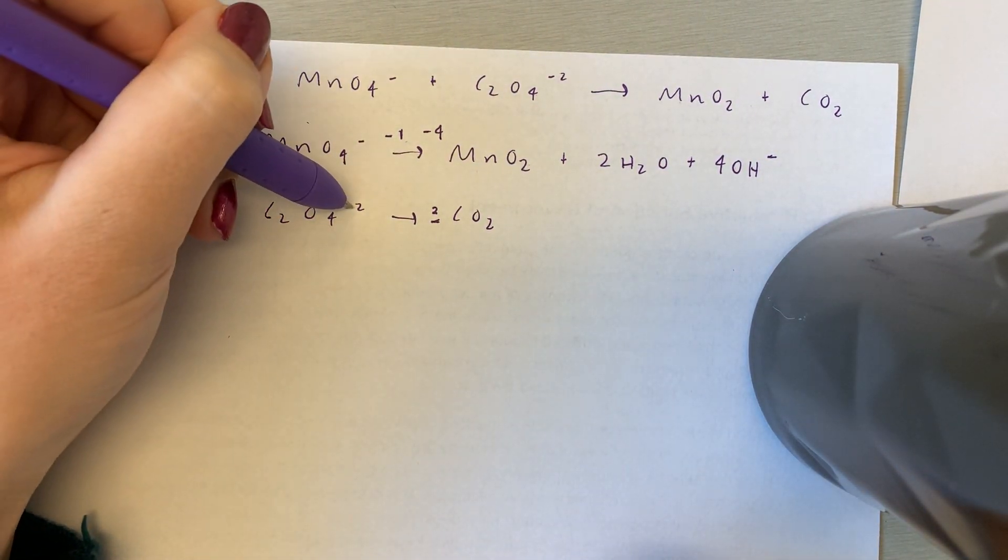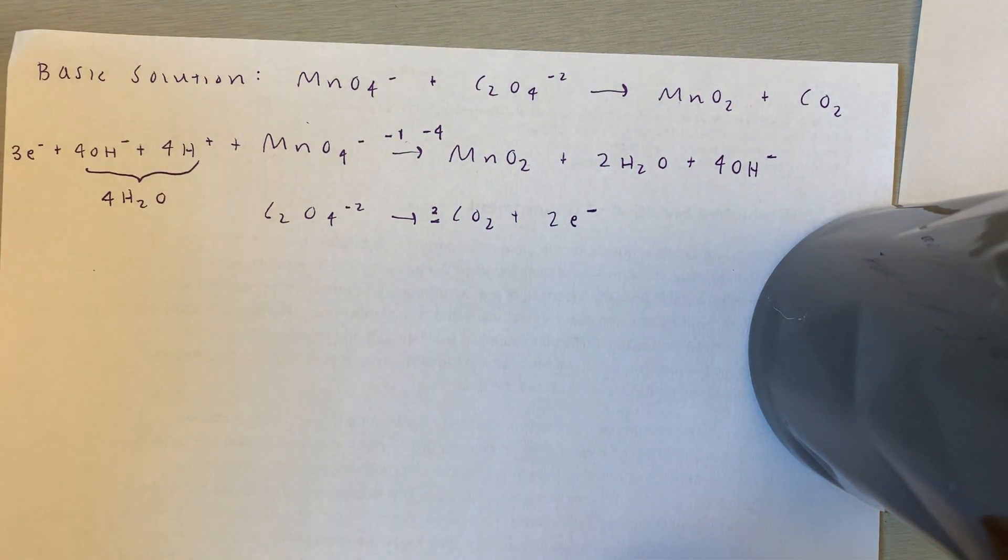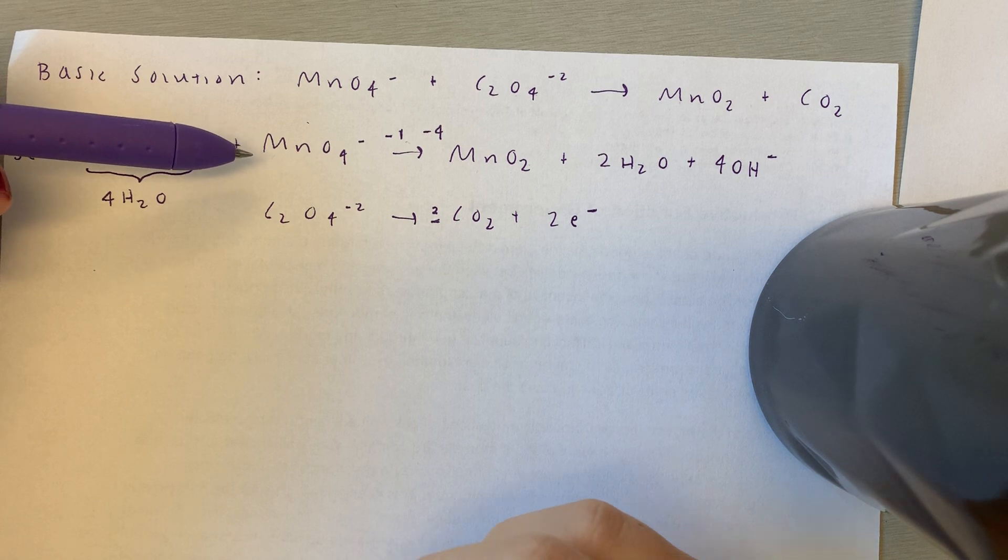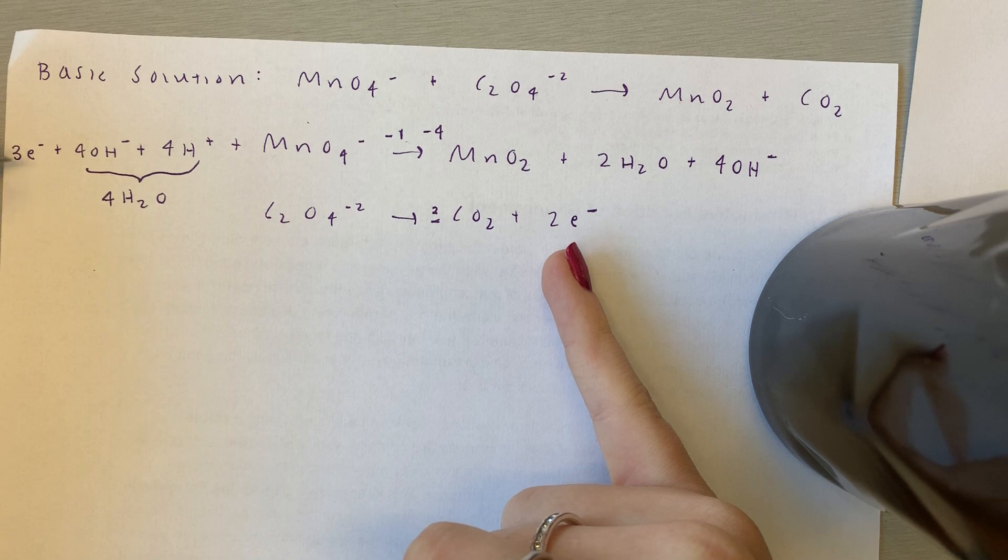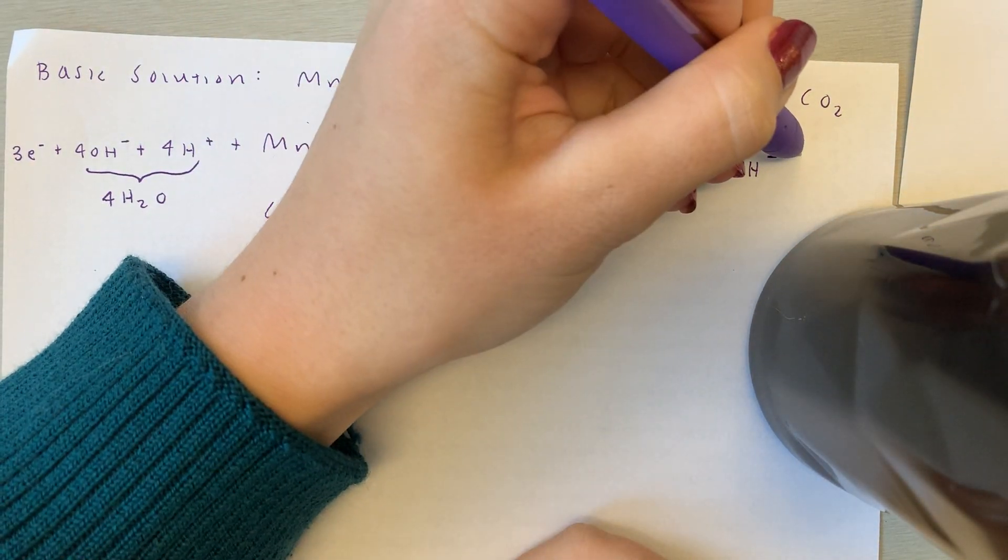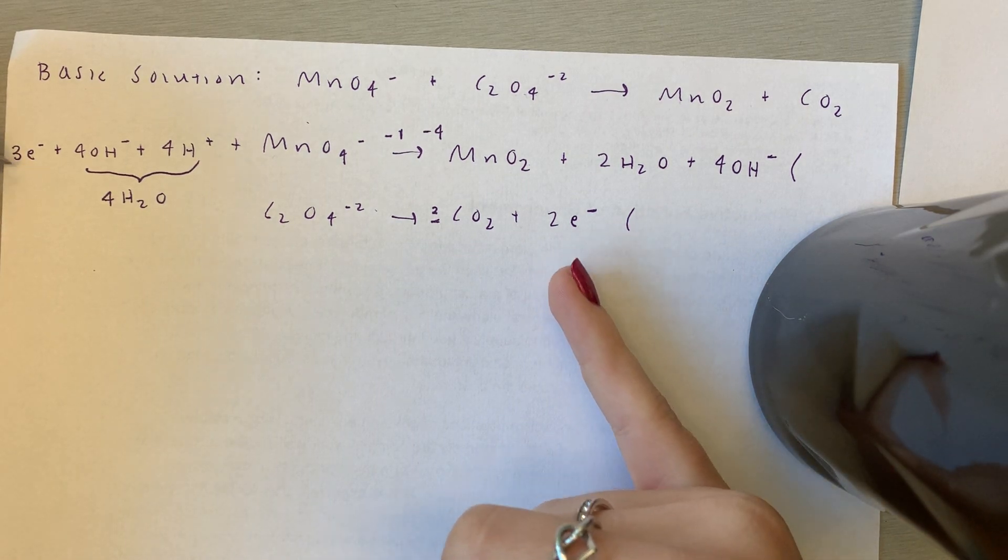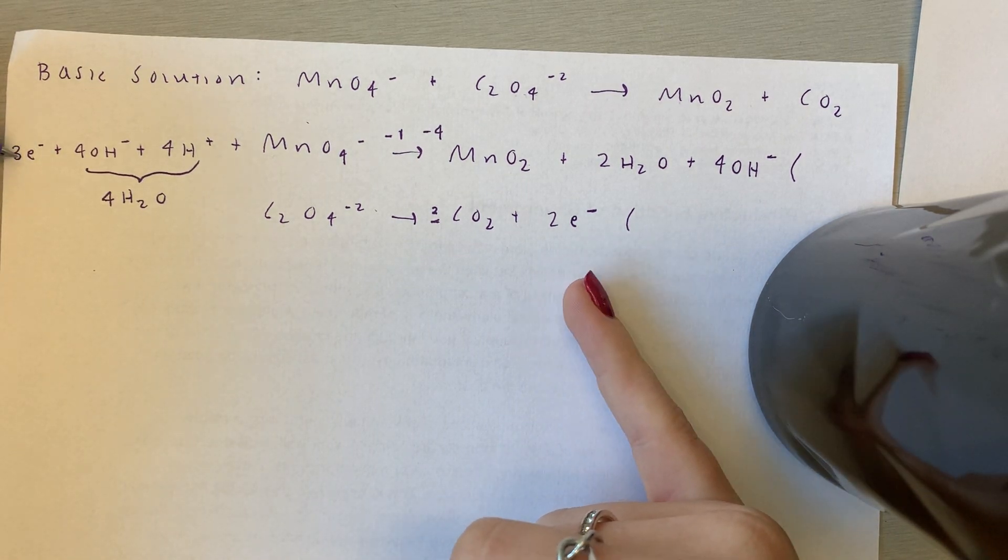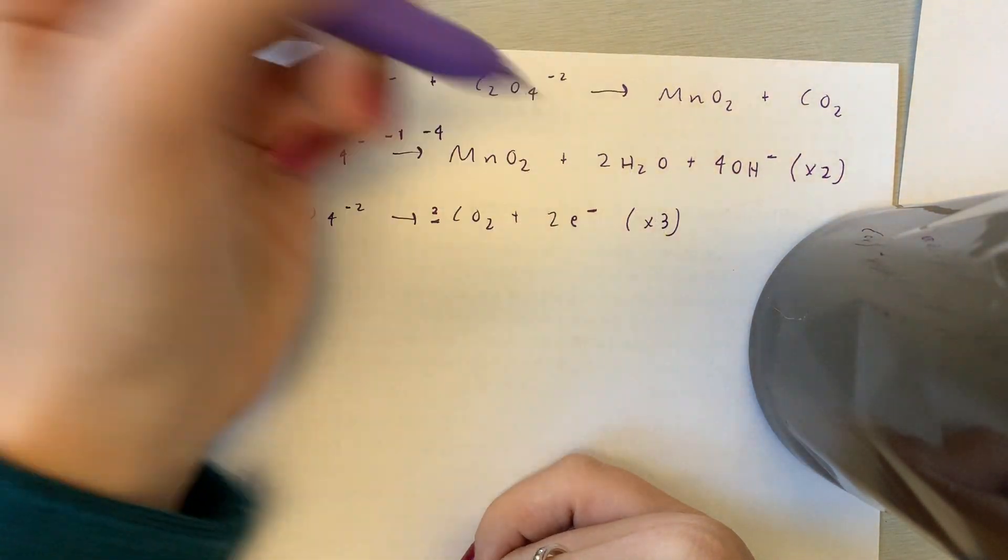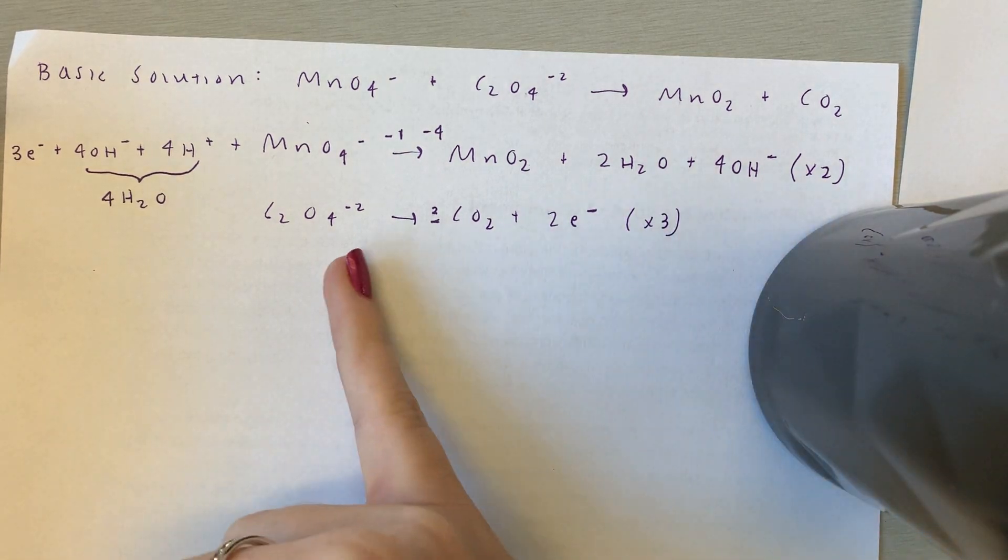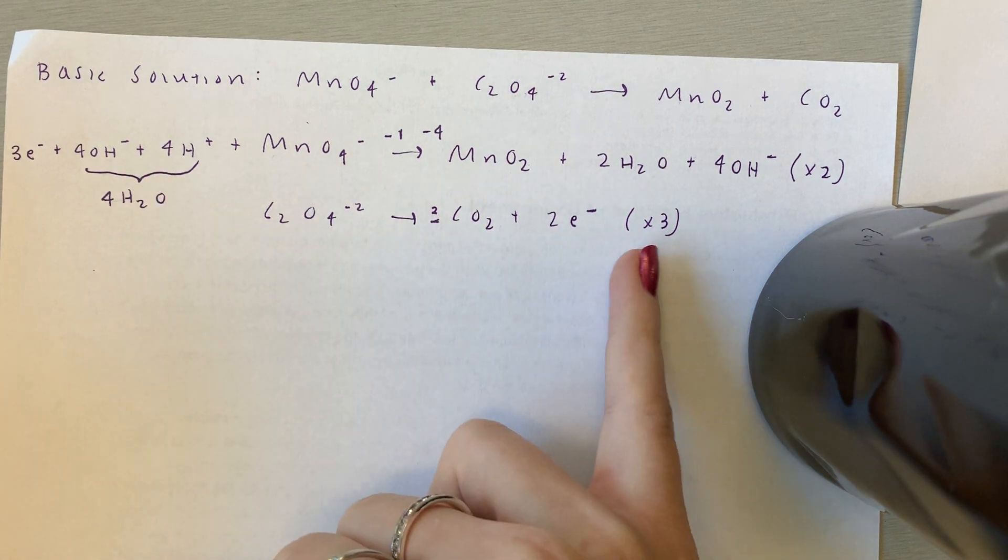And for this side, we have a minus two here, but nothing here. So we're going to add two electrons to this side. So now the elements are balanced, but the electrons on either side aren't the same. So we're going to multiply each reaction by the common denominator of three and two. So that's six, three times two, and two times three. And these numbers will apply to everything in the equation. So the two is going to go to everything here, and the three is going to go to everything here.